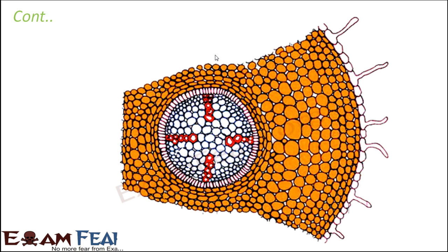So this is how the movement will take place. Water will enter through the root hairs and then it will move through the cell walls — it is always moving through the cell walls. But as soon as it enters the endodermis layer, where the casparian strip is, it will directly flow into the cytoplasm. So here it will no more move through the cell walls.